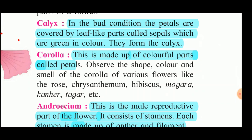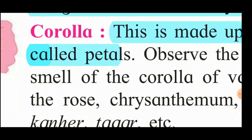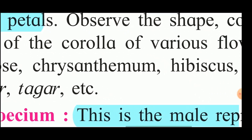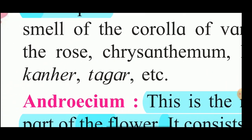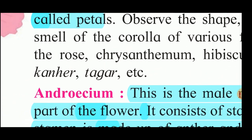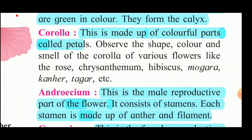Petals are of different colours. Even if you take a hibiscus flower you can see different colours - white, yellow, orange, red, and pink. Rose also we get of different colours. The different colours of the corolla or petals give colour to the flower. Now observe the shape, colour, and smell of the corolla of various flowers like rose, chrysanthemum, hibiscus, mogra, and canhere.